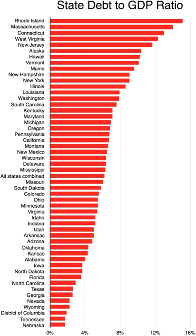Although the exact position of each component may vary, there are certain components common to most state governments. Education is one of the largest areas of spending by state governments, including K-12 education as well as state university systems. Health care is also one of the largest areas of spending, including spending on Medicaid and the Children's Health Insurance Program.